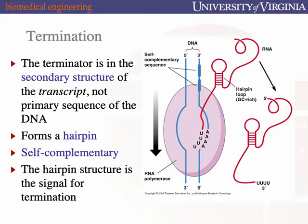There are consensus sequences for these terminator signals, so you can determine the ends of genes bioinformatically. You look for one of these hairpin sequences, check if it conforms to a transcriptional termination sequence, and even if you've never studied the gene before, you can make an educated guess about where that transcript will stop.